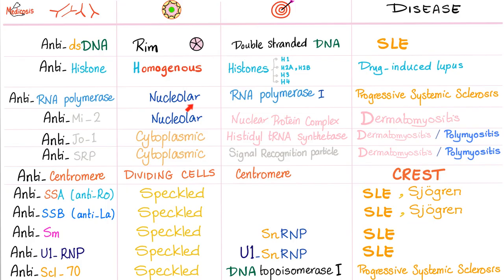Anti-RNA polymerase: pattern is nucleolar; targets RNA polymerase 1; associated disease is progressive systemic sclerosis — not CREST syndrome. CREST is limited, but this is the progressive systemic sclerosis.